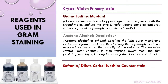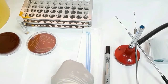The third reagent is acetone alcohol, which acts as the decolorizer. Acetone alcohol or ethanol dissolves the lipid outer membrane of gram negative bacteria, leaving the peptidoglycan layer exposed and increasing the porosity of the cell wall. The insoluble crystal violet complex is then washed away from the thin peptidoglycan layer, leaving gram negative bacteria colorless. The fourth reagent is safranin or dilute carbol fuchsin, which acts as a counter stain or secondary stain.